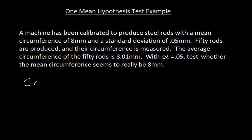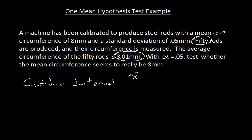The first way we're going to do this is with a confidence interval. We look at the sample data: n equals 50, x-bar equals 8.01, and alpha equals 0.05. The standard deviation is 0.05 — notice that's sigma, not s, it's a population standard deviation. The null hypothesis is that mu equals 8, meaning the average circumference is actually 8 millimeters — practically, that the machine works as it's supposed to.